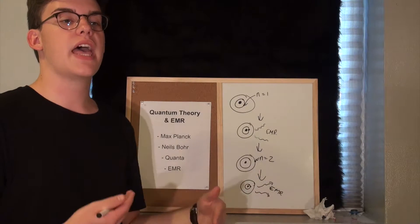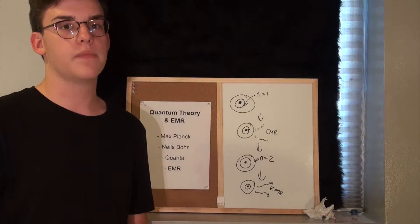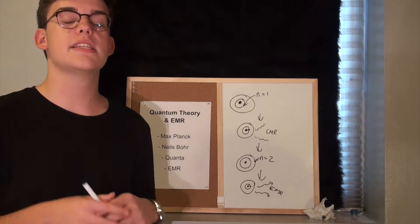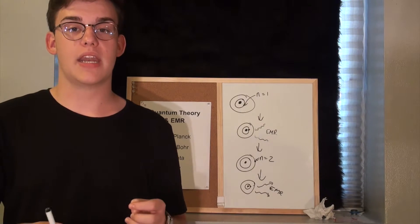In the third diagram, you see the atom has actually jumped to the N equals 2 principal energy level. In contrast, when the atom releases energy, it releases energy in the form of electromagnetic radiation.